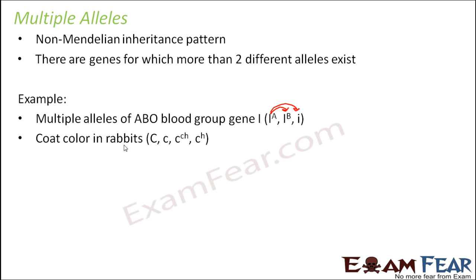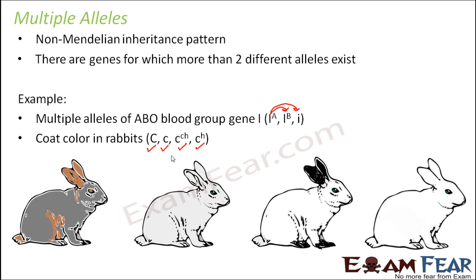Three is not the maximum number — there are genes with more than three or four alleles. For rabbit coat color, the four alleles are: capital C, small c, C^CH, and C^H. Capital C is the dominant trait and codes for a fully colored coat.